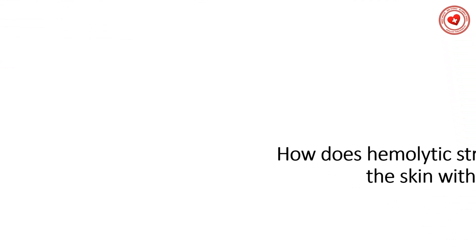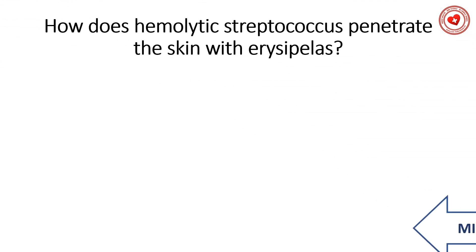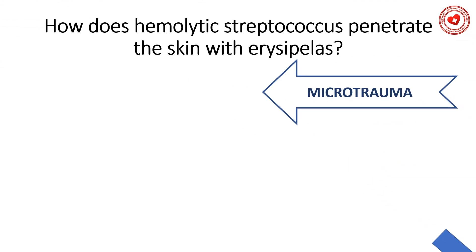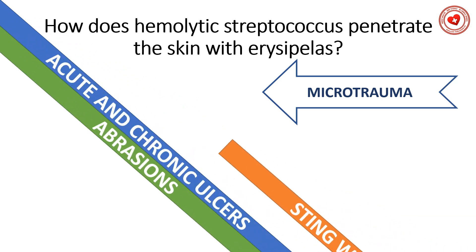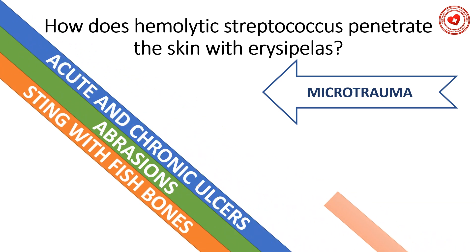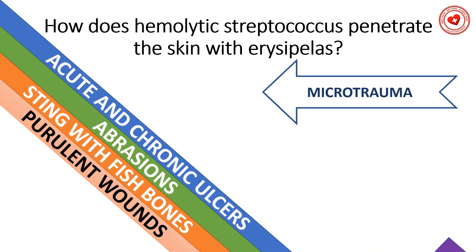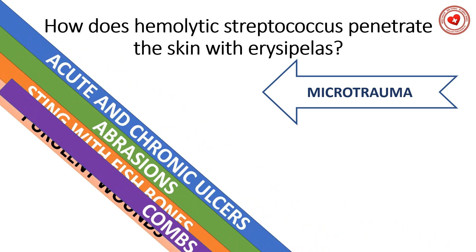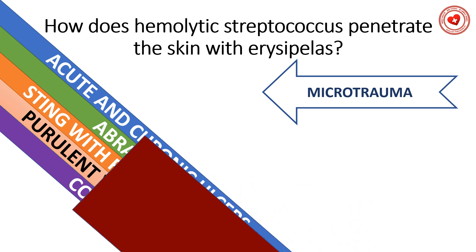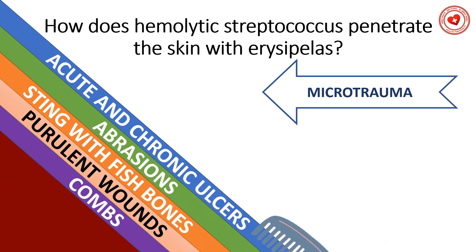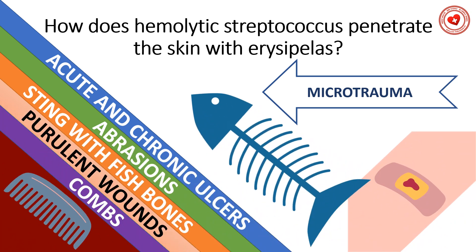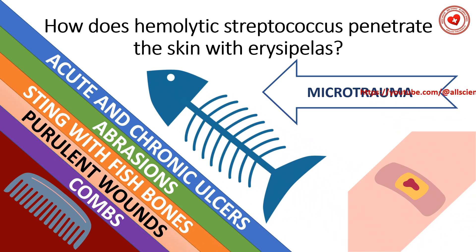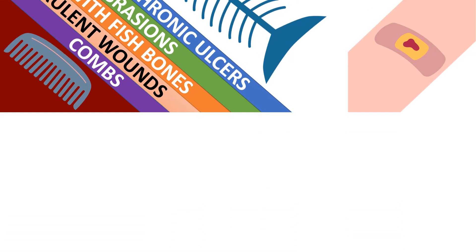How does hemolytic streptococcus penetrate the skin in erysipelas? Through microtrauma: scratching, abrasion, sting with bone or fish, purulent wounds, acute and chronic ulcers.